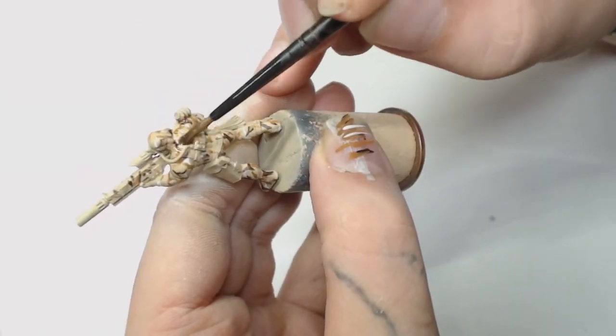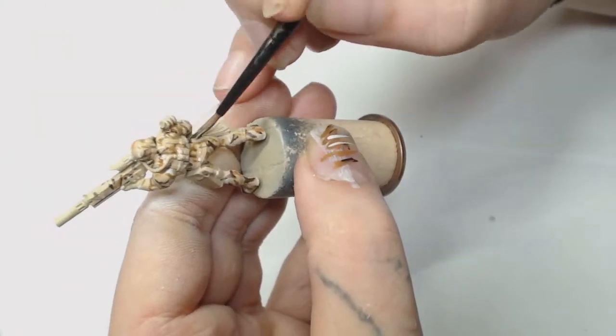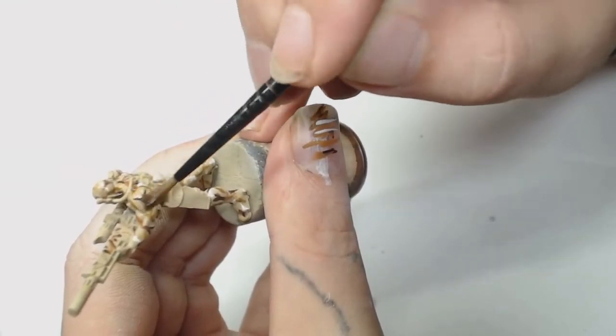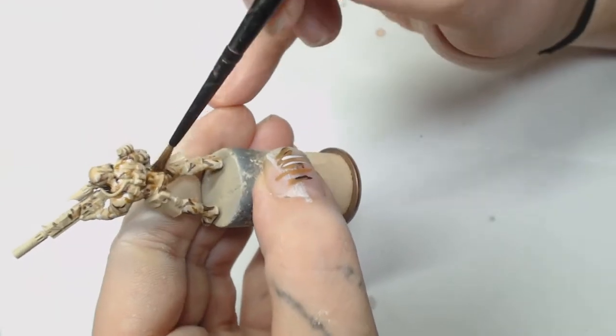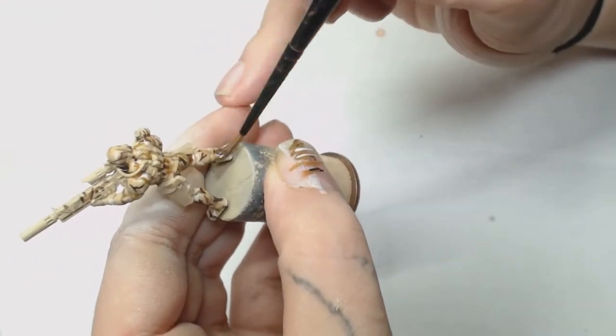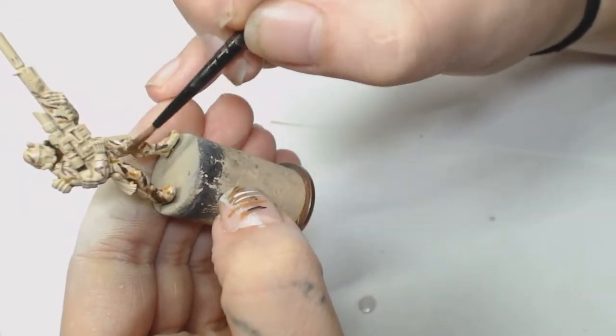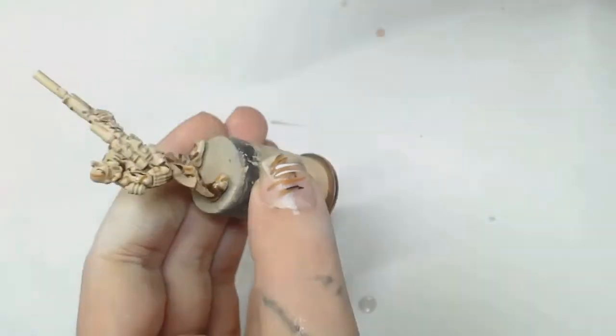Now we're using Agrax Earthshade and a lot of Lahmian Medium because we want to tone this down subtly. It's also going to act as a filter on all those different colors. They are very different, but when we're done they're going to look similar because of the filters we've put on - they're all going to have a filter of Agrax Earthshade on them.